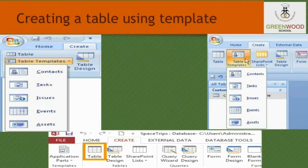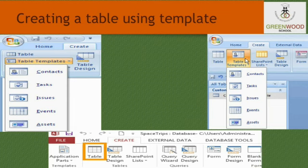Creating a Table Using Templates. One of the easiest ways to create a table is to use a template. A template is a ready-to-use database that contains various types of tables, queries, forms, etc., needed to perform a specific task. Click on the Microsoft Access 2010 button. The Backstage View appears on the screen. Now select the Sample Template category under the Available Templates. Access will display a list of all the available templates. Select any template from the displayed list.